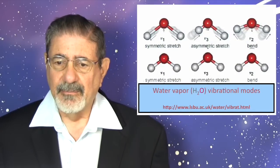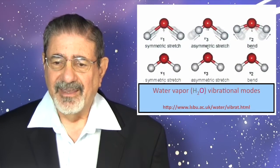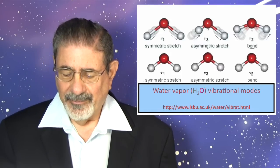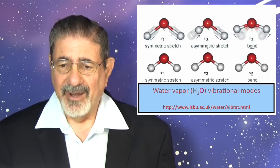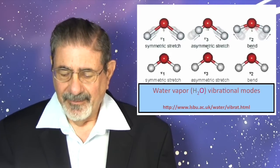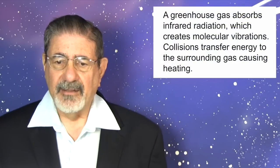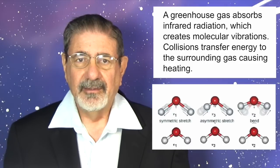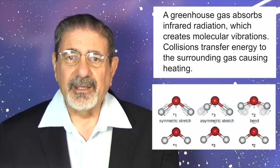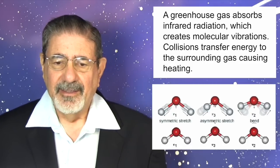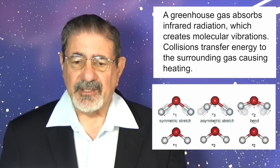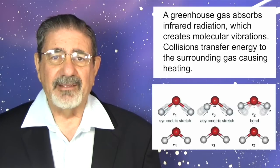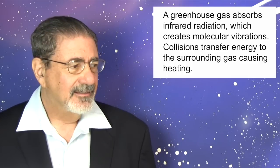Here we see the motions that make possible the absorption. This is water vapor vibrational motions, important for capturing radiation in the form of infrared. A greenhouse gas absorbs infrared radiation, which creates molecular vibrations. That vibrating molecule makes collisions with other molecules and transfers that energy to the surrounding gas or environment, and it ultimately ends up in random motion, which we call heat — that's heating.